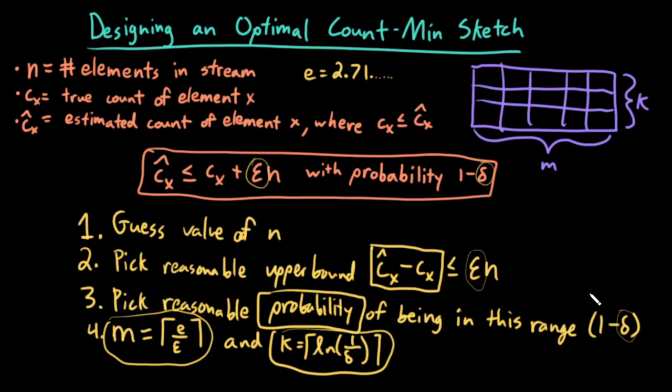And similarly, if I want this probability to be bigger, I would need delta to be smaller. But the smaller my value of delta would be, the bigger k would be. So I'm trading off, basically—if I want to have a tighter range, I have to create more columns. And if I want to have a higher probability of being in that range, I have to create more rows and therefore hash functions.